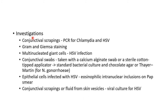For investigations in neonatal conjunctivitis, conjunctival scrapings should be sent for polymerase chain reaction for chlamydia and HSV. Gram and Giemsa staining can also be done. Multinucleated giant cells can be seen in HSV infection. Conjunctival swabs with calcium alginate or sterile cotton-tipped applicators can be sent for standard bacterial culture, and chocolate agar or Thayer-Martin medium to rule out Neisseria gonorrhoeae. Epithelial cells infected with HSV can show eosinophilic intranuclear inclusions on Papanicolaou smear. Conjunctival scrapings or fluid from skin vesicles can be sent for viral culture for HSV.